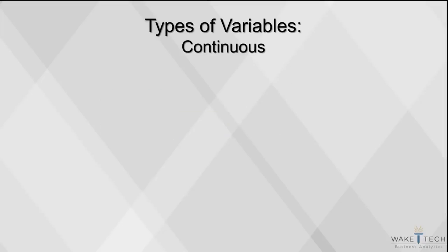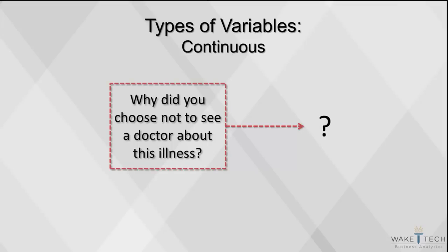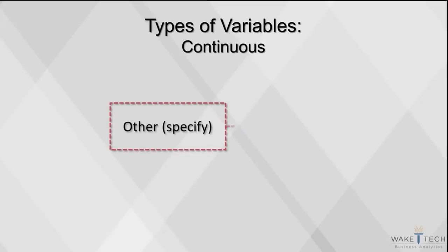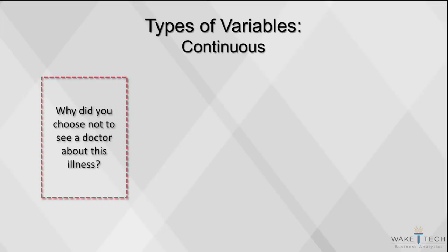Continuous variables are usually left in the same format as they are in the original dataset. However, be careful about missing values and miscoded data. You may also need to code responses from fill-in-the-blank and open-ended questions. With an open-ended question such as 'Why did you choose not to see a doctor about this illness?' respondents will all answer differently.